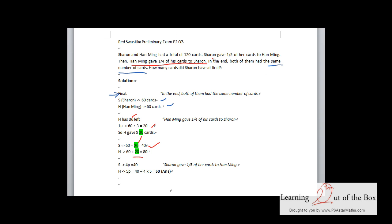Then, Sharon gave one-fifth of her cards to Han Ming. So by now, Sharon has four parts left, which is 40.